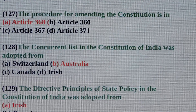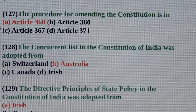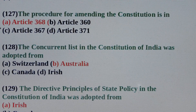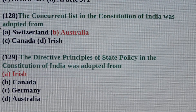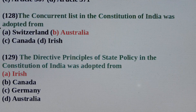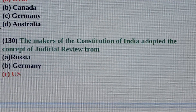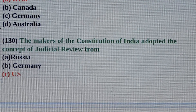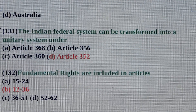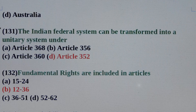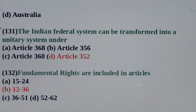Question No. 126: Directive principles of state policy are included in the articles? Answer is Option C: Article 36 to Article 51. Question No. 127: The procedure for amending the constitution is in? Answer is Option A: Article 368. Question No. 128: The concurrent list in the constitution of India was adopted from? Answer is Option B: Australia. Question No. 131: The Indian federal system can be transformed into a unitary system under? Answer is Option D: Article 352.